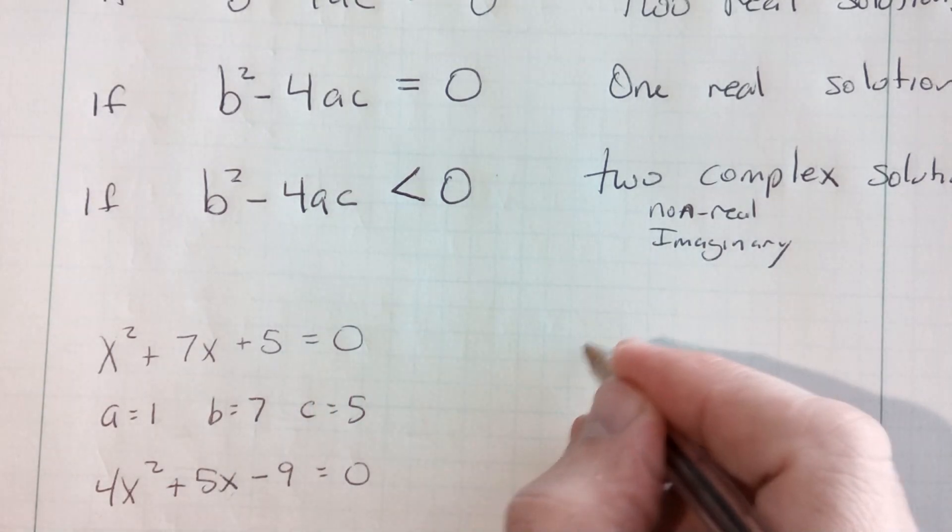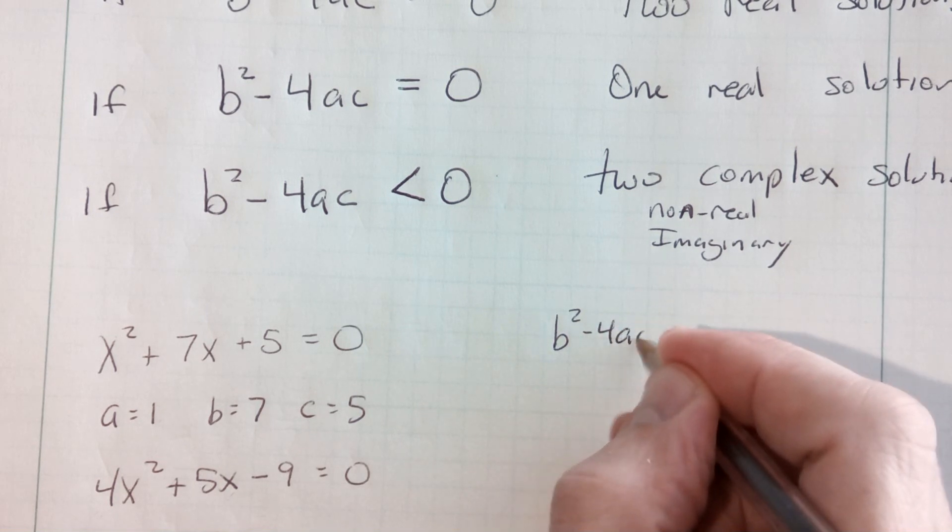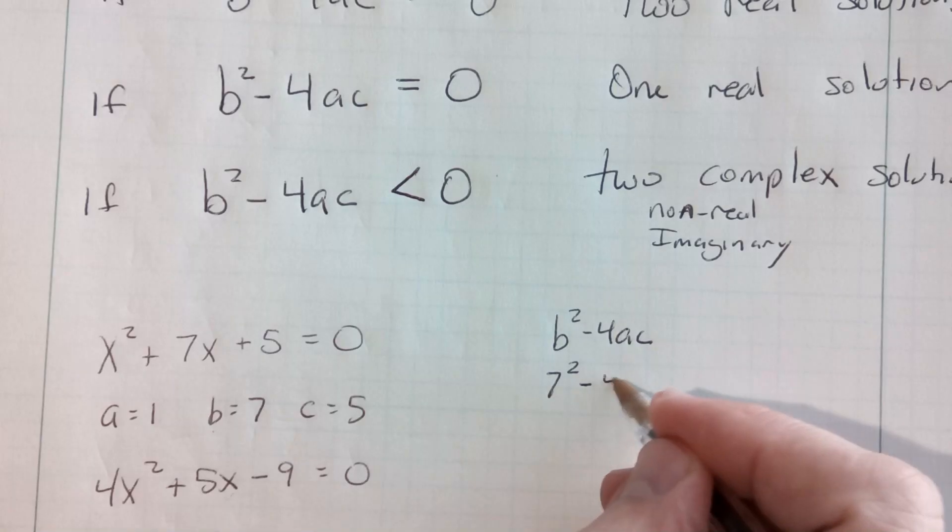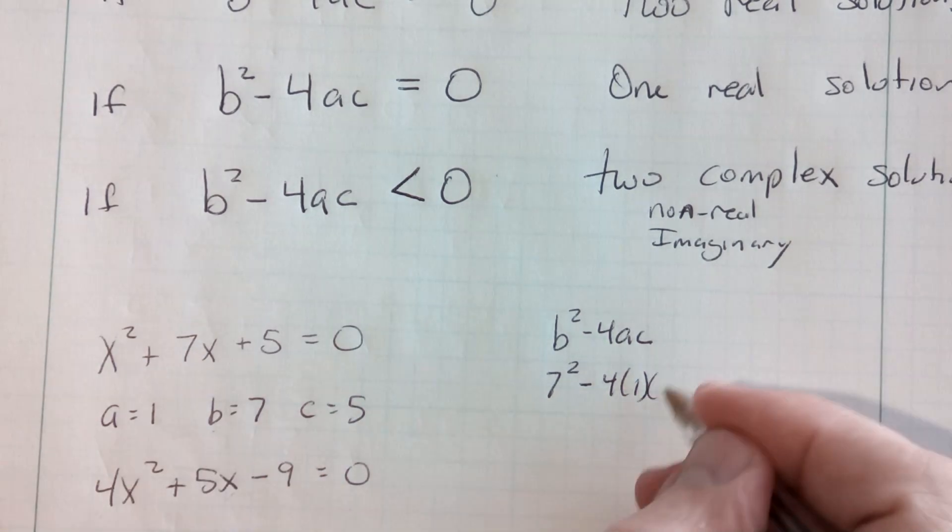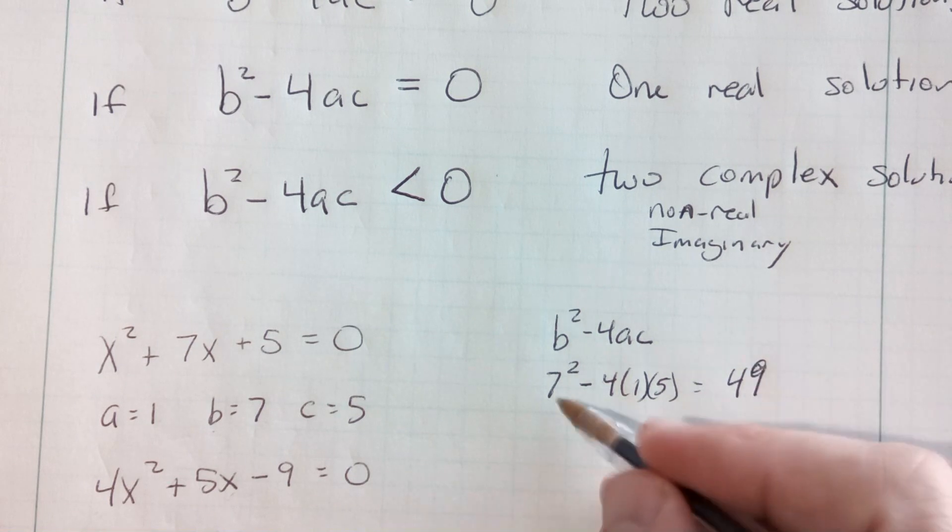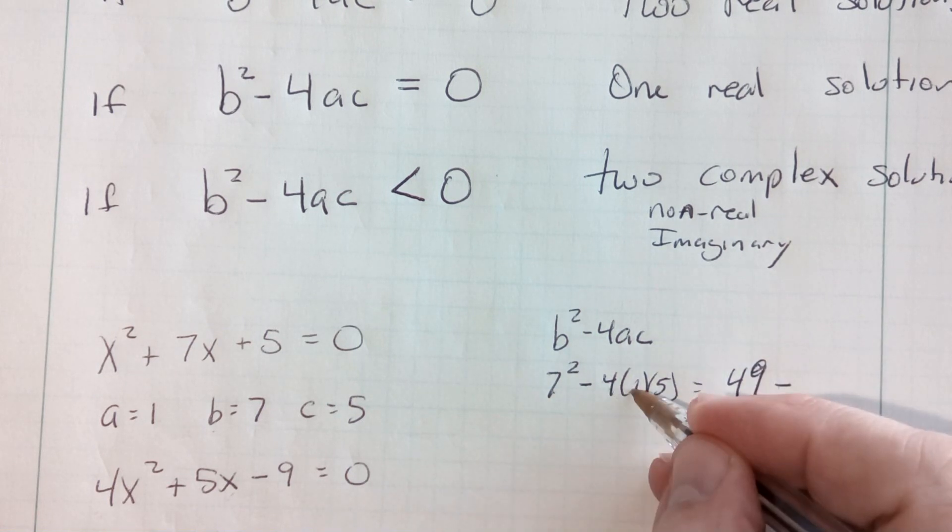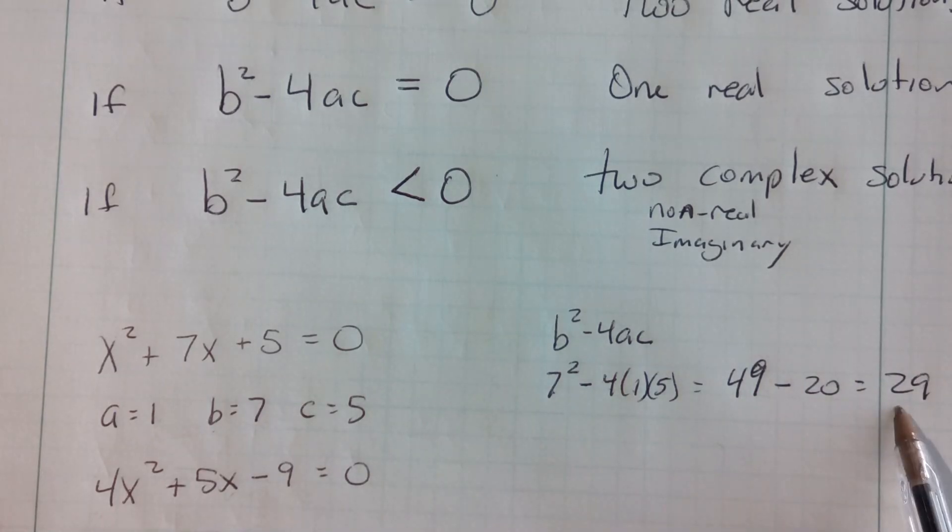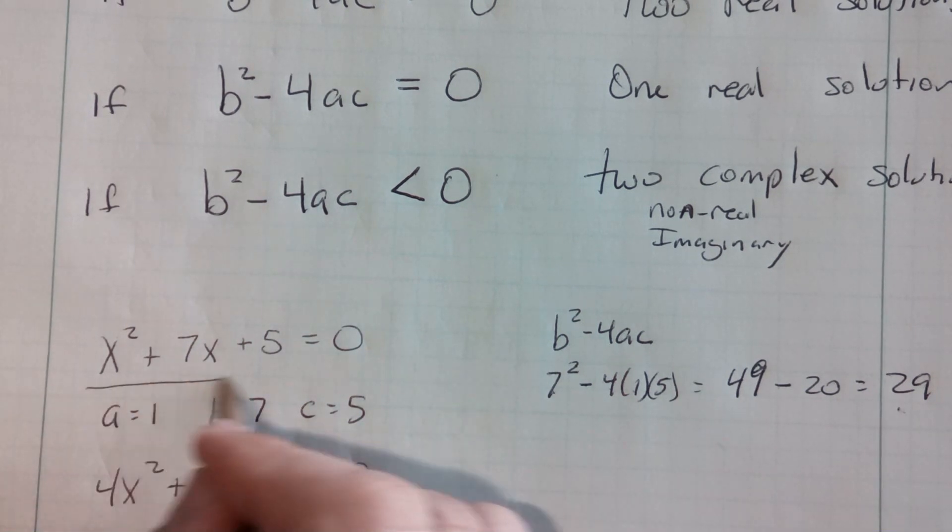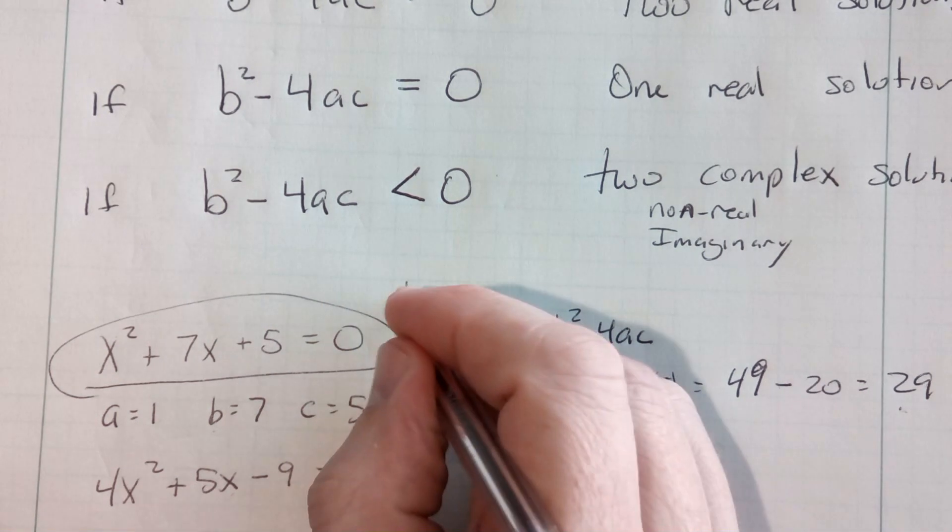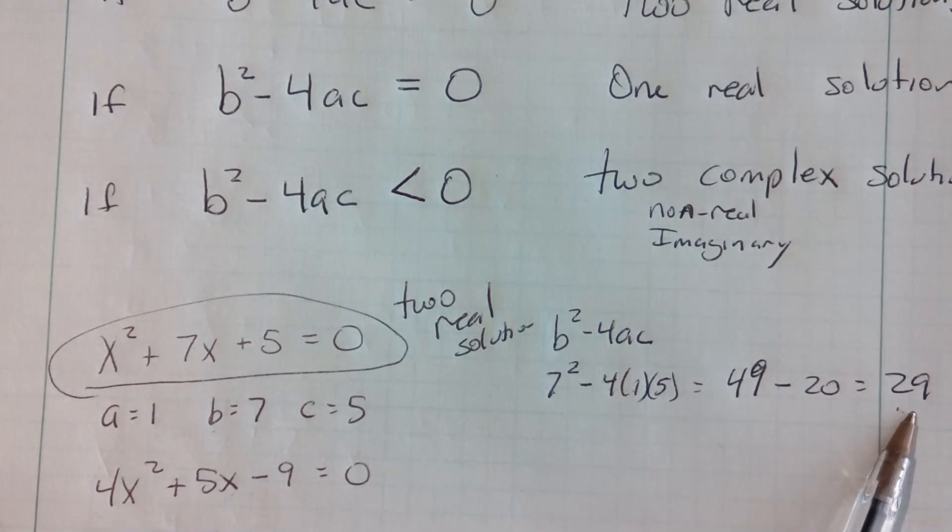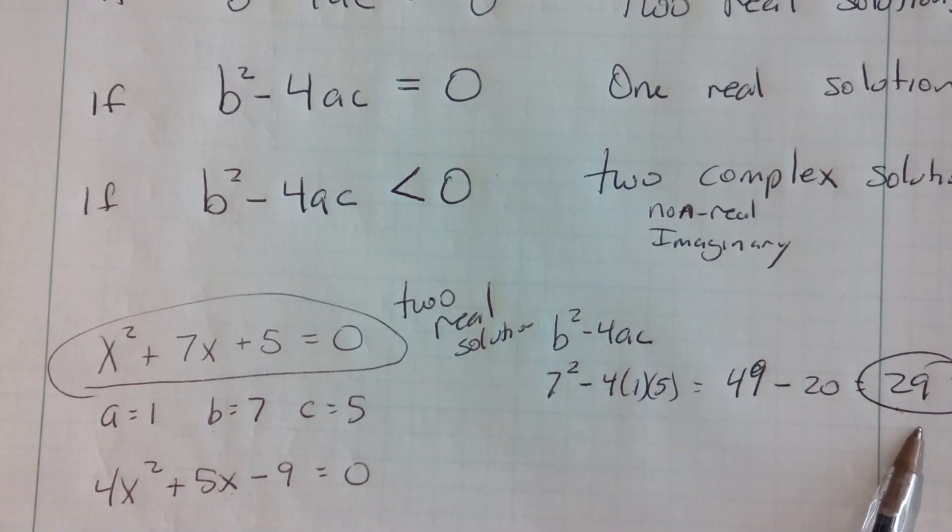What I'm going to do is just do the b-squared minus 4ac. b is 7, so I'm going to do 7-squared minus 4 times a is 1 times c, which is 5. That's going to give me 49, that's the 7-squared, minus 4 times 1 is 4 times 5 is 20, which is going to equal 29. Since 29 is a positive number, this quadratic here has two real solutions. The discriminant is 29.